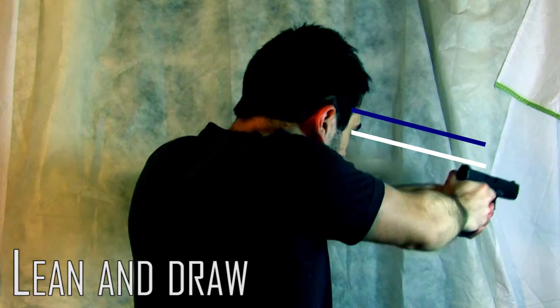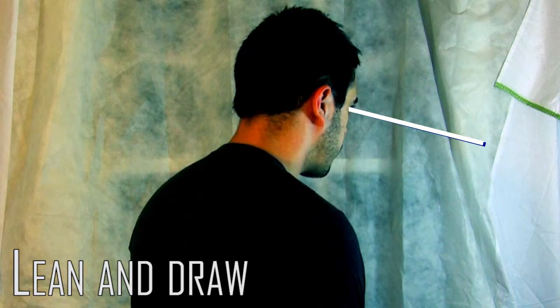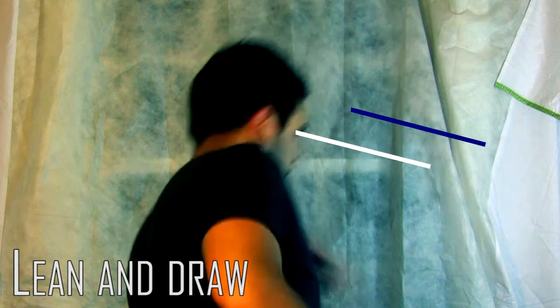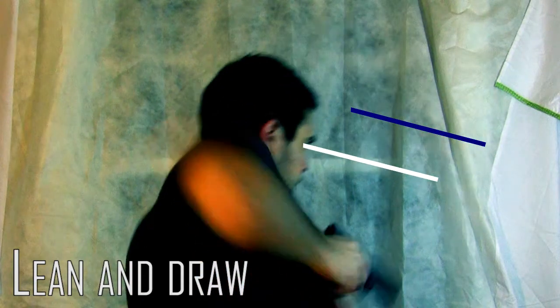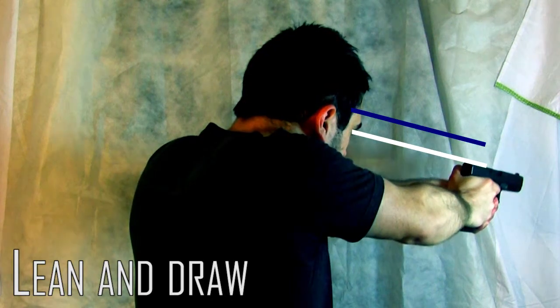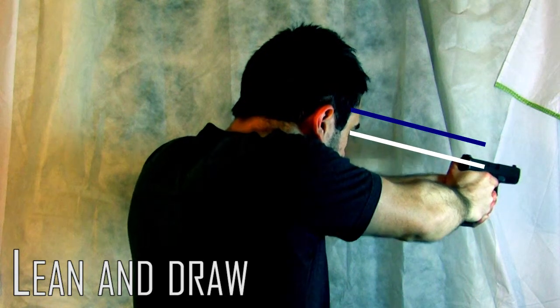As you can see, the white line has to travel a great distance laterally, and while I do end up fairly close to my original position, a lot of that is due to muscle memory and luck. This is inefficient due to the amount of time and energy it takes to obtain your firearm and the amount of information your eyes have to process.